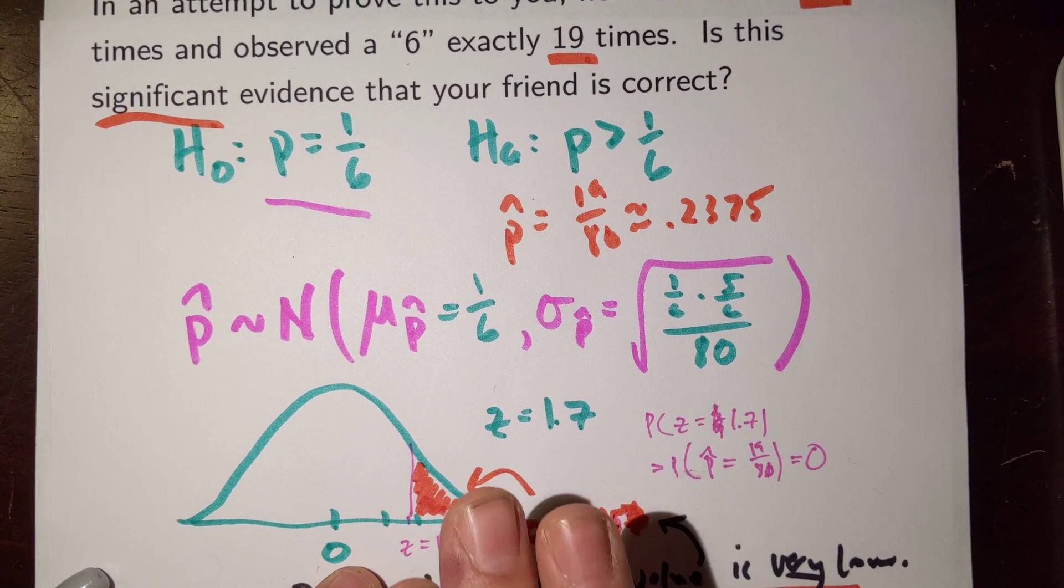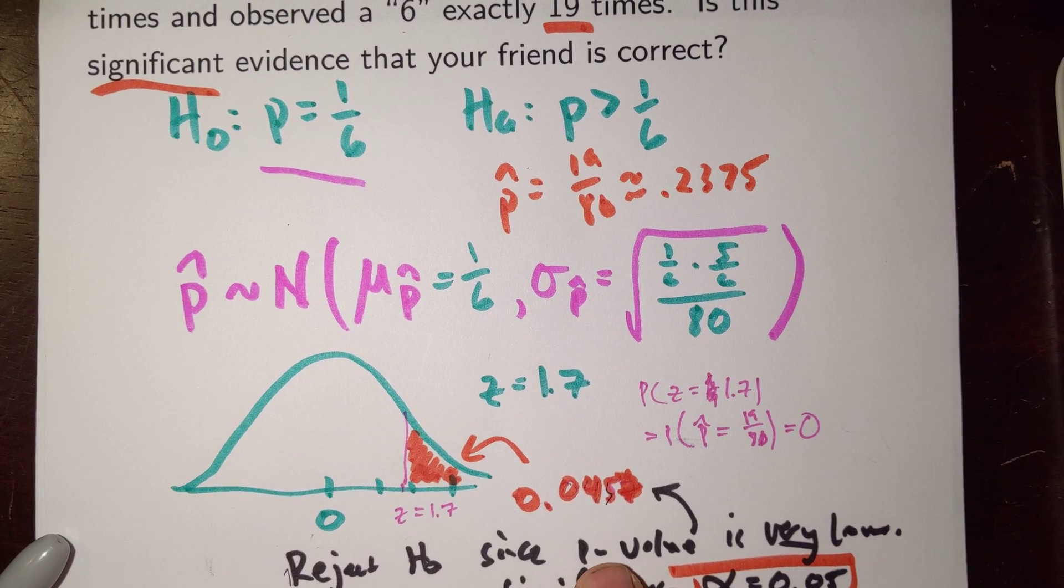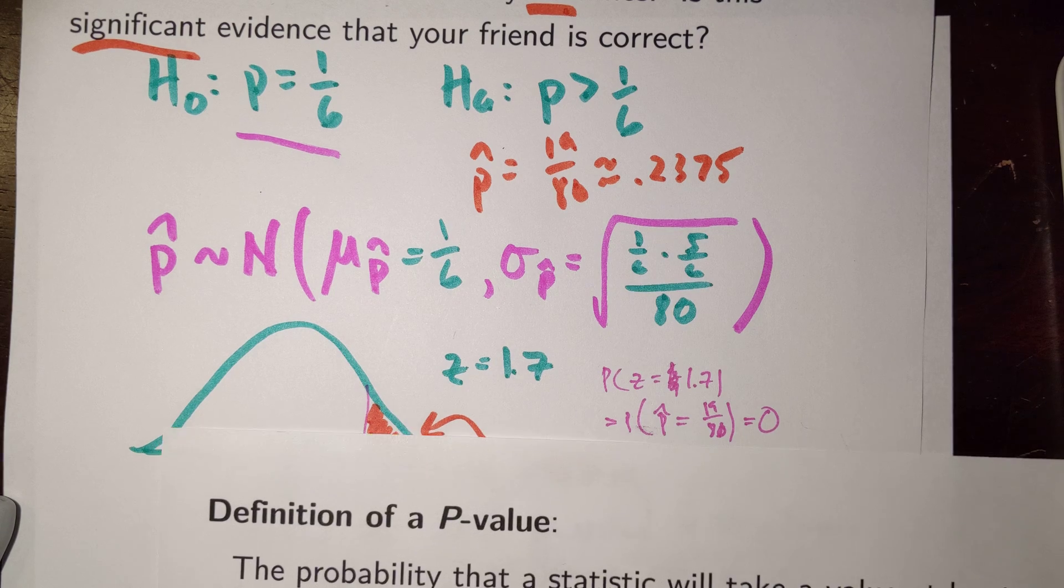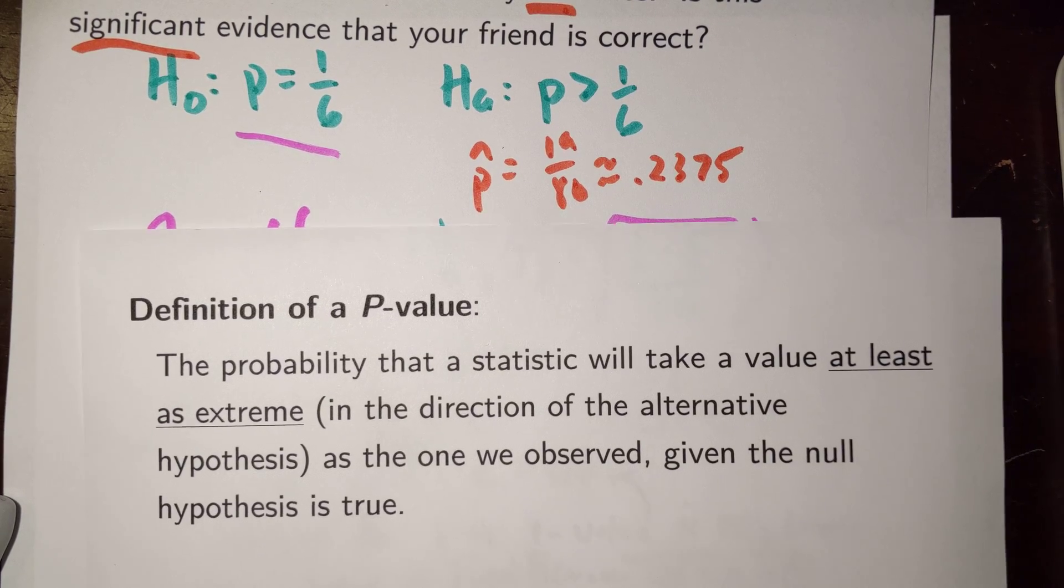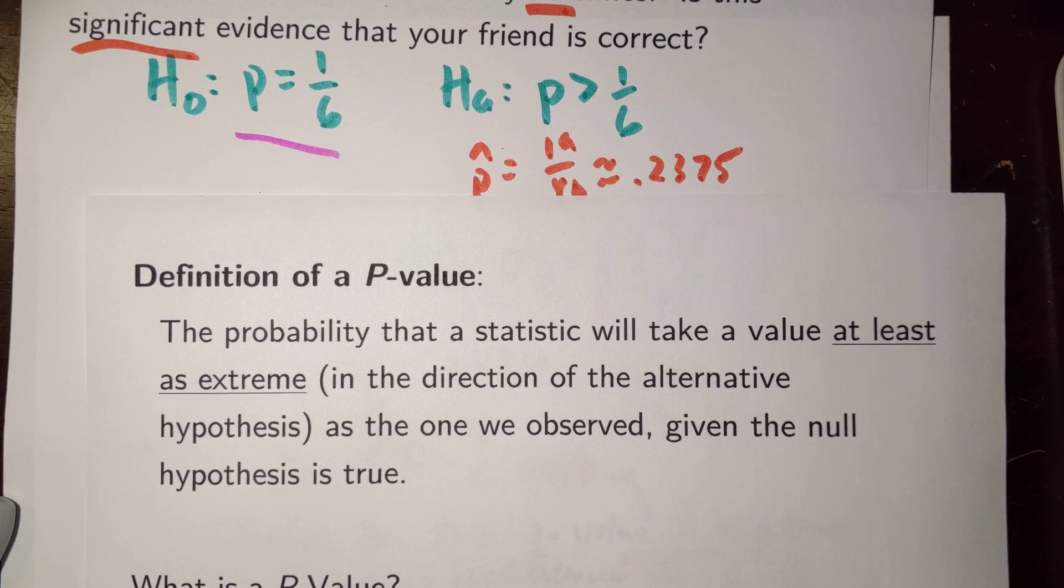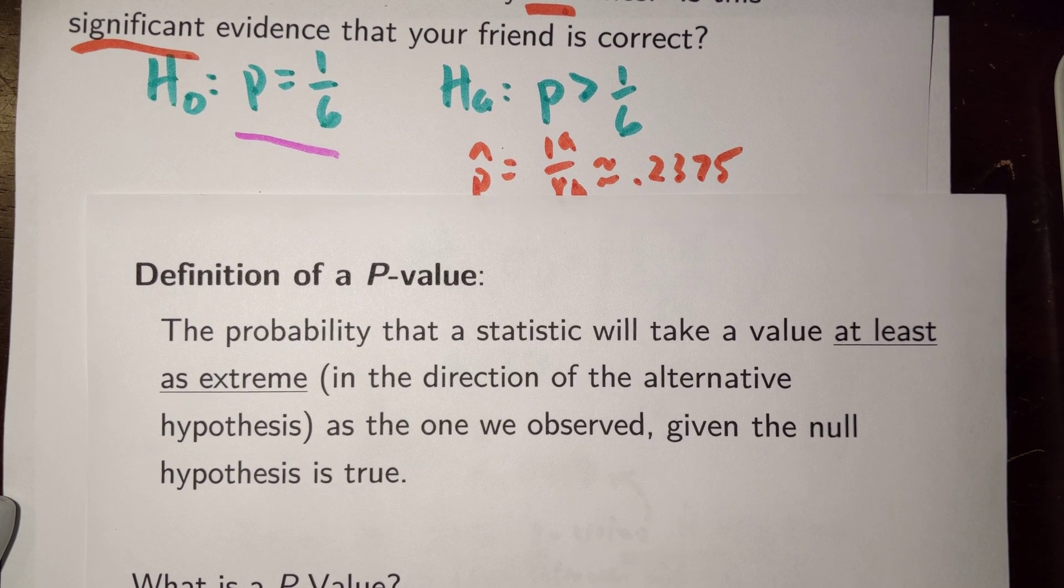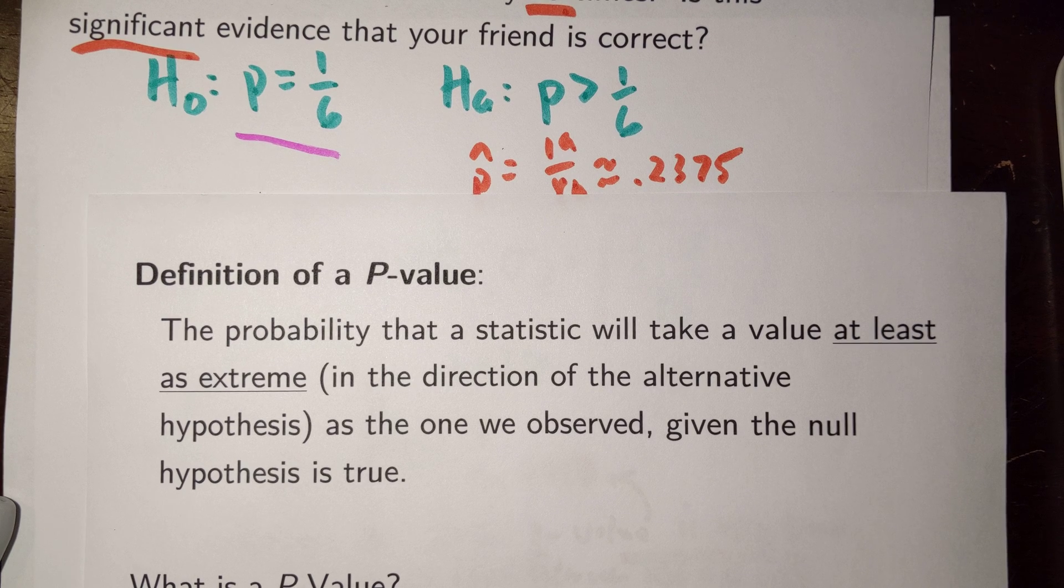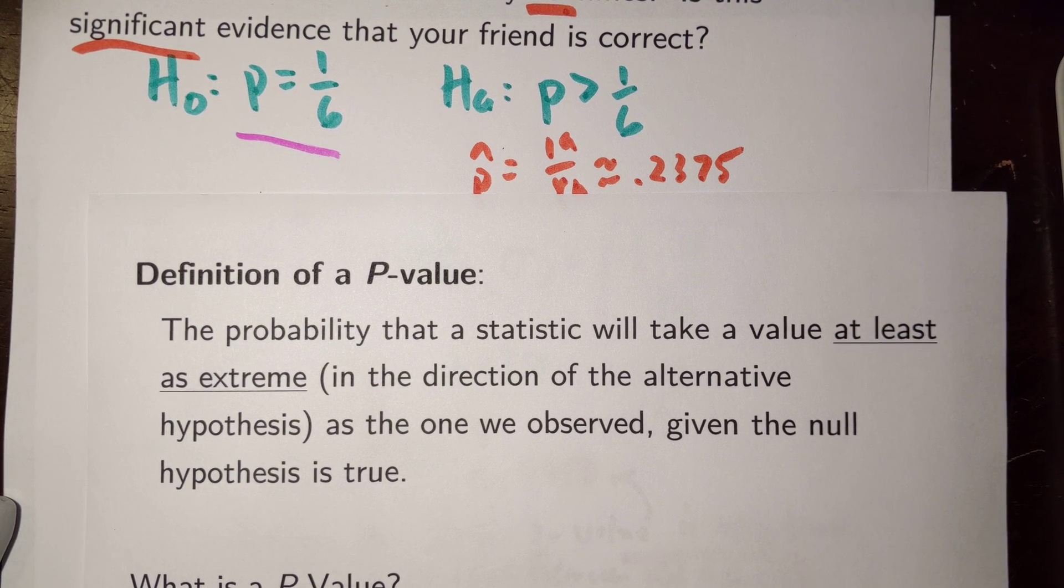And we always did it by a tail. We can't just look at a particular value and it's lonesome. We have to look at the probability of a value like that or even more extreme in the direction of the alternative. And that is actually the definition of a p-value.